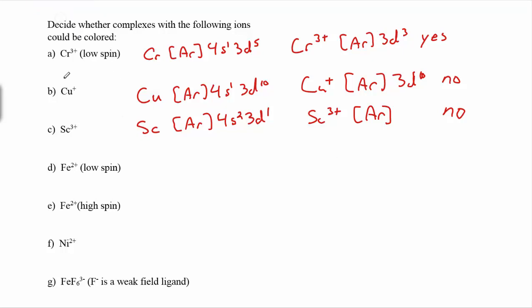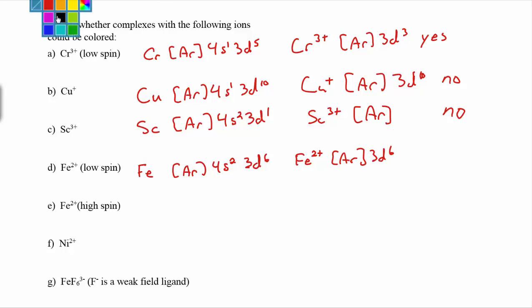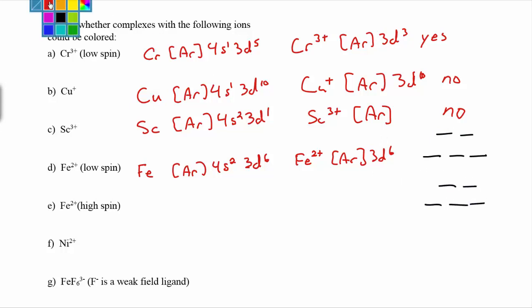Now things get a bit more involved. When you have 4 to 7 d electrons, you have to deal with low spin and high spin. For Fe²⁺, iron is [Ar] 4s² 3d⁶, so Fe²⁺ is [Ar] 3d⁶. For the low spin case, we fill the lower set first — each orbital gets one electron, then we pair them up in the lower set. With 6 electrons, there are still empty spots in the upper set, so we're not d0 or d10, and yes, we expect Fe²⁺ low spin complexes to be colored. Note we don't really need to fill in the electrons to answer this — we just need to confirm it's not d0 or d10 — but the filling will matter for magnetism shortly.